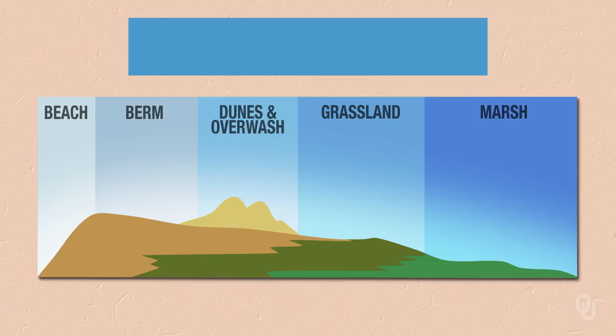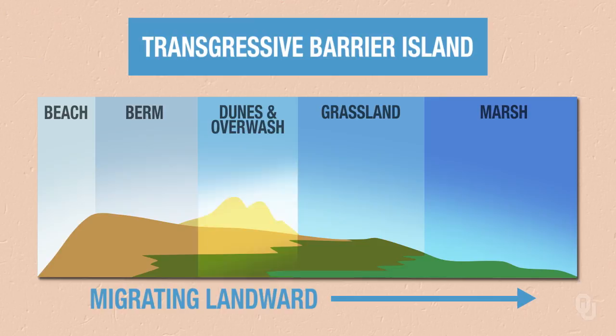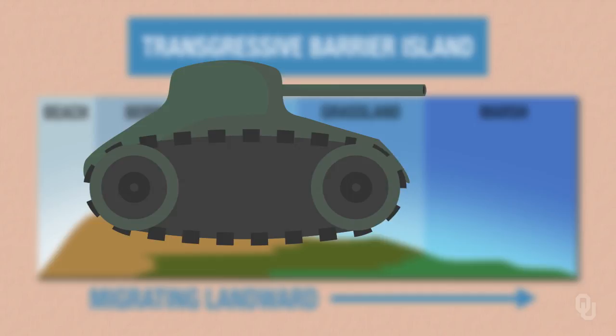This is a cross-section of a barrier island — we call it a transgressive barrier island because it's migrating landward. You can see here the beach, the dunes, and then the lagoon and marsh. Notice that the beach and dunes are migrating over the grassland and the marsh. You can think of it like a tank tread: sand is being pushed from the beach to the back part of the barrier island, moving the whole island landward.